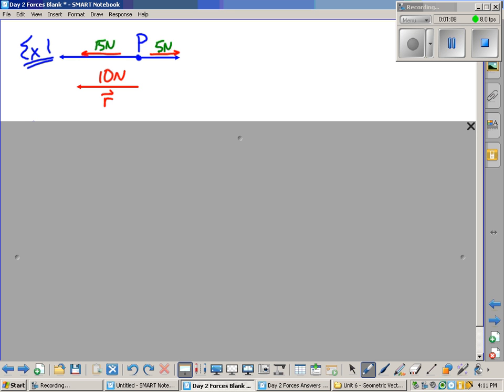We call that the resultant. Remember the resultant is a vector, so we would say that the resultant is 10 Newtons to the left.